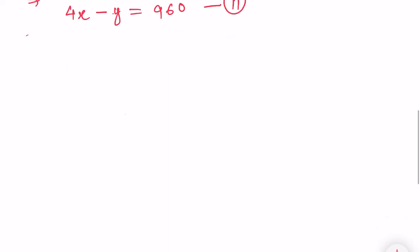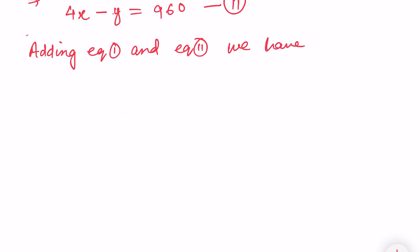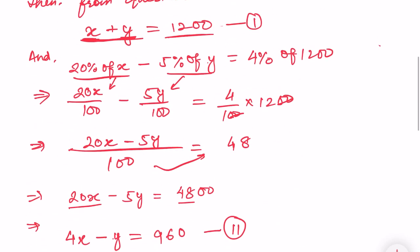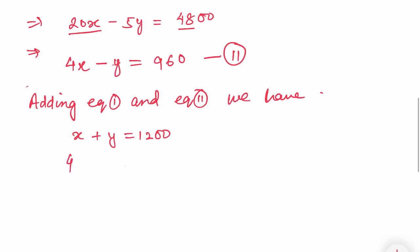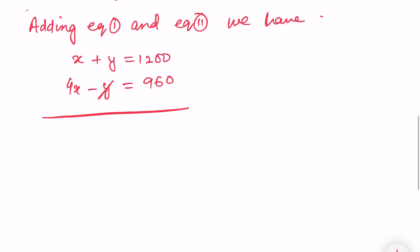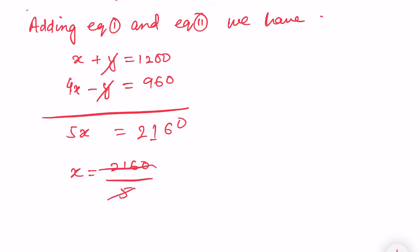We have equation 1: X plus Y equals 1200, and equation 2: 4X minus Y equals 960. Adding both equations, the Y terms cancel. So 5X equals 2160, which gives X equals 2160 divided by 5, so X equals 432.